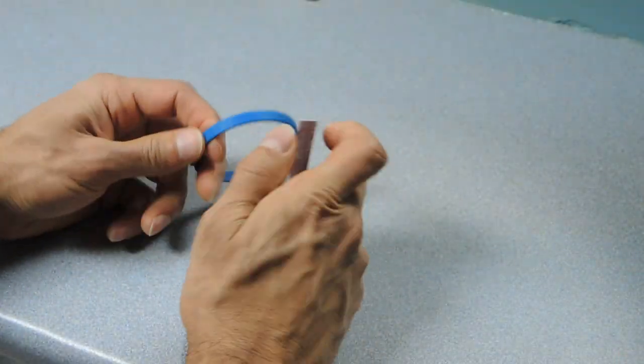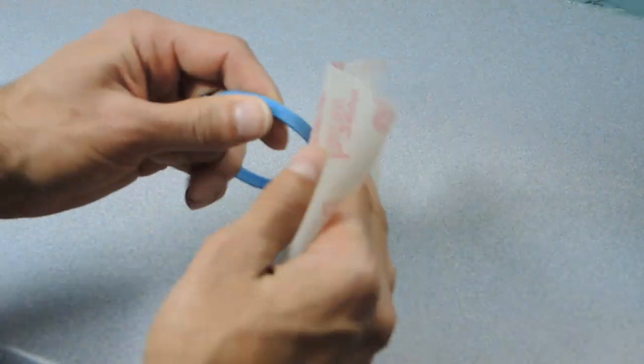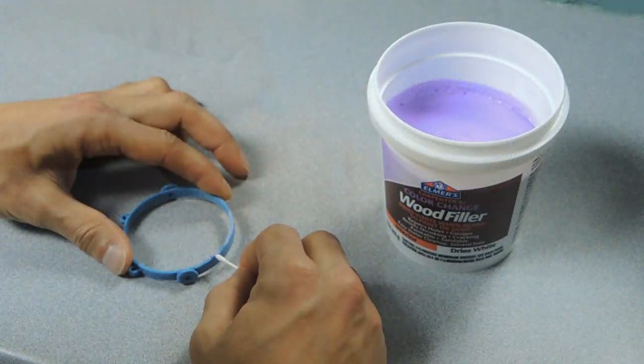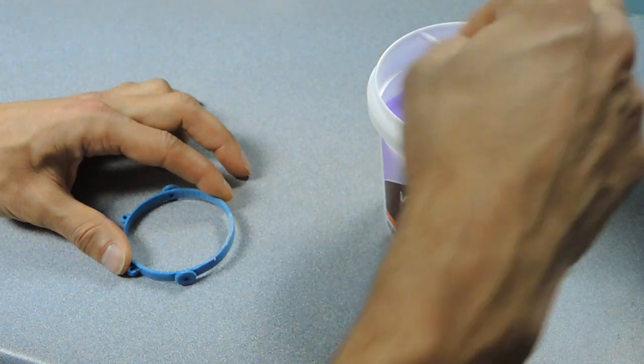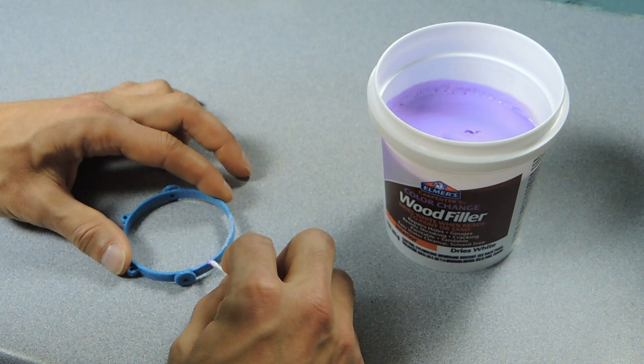All the parts then went through multiple rounds of sanding, starting with a rough grit and then moving to a fine grit. Then wood filler was used on all the parts to fill in any gaps in the printing. I really like this color change wood filler because it dries white so that you know it's cured.